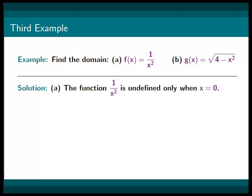Our solution will start by acknowledging that our function 1 over x squared is undefined only when x equals 0. Therefore, the domain for f is x cannot be 0.